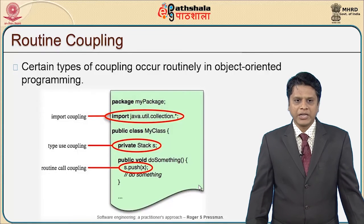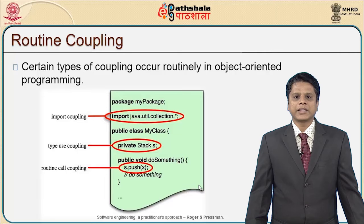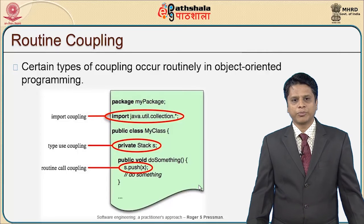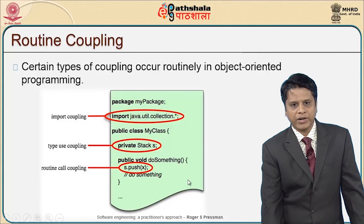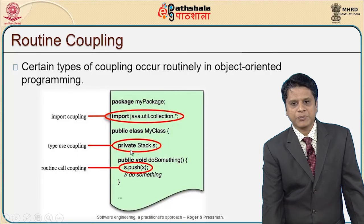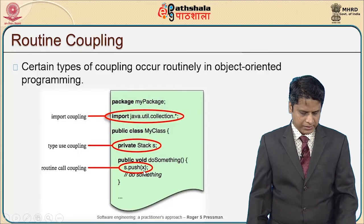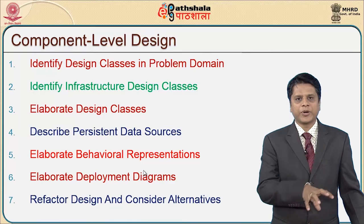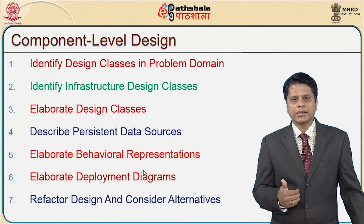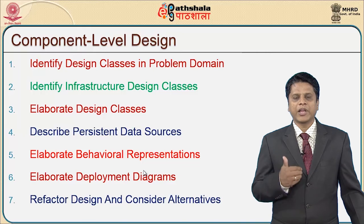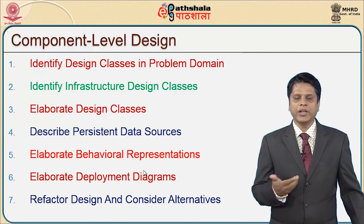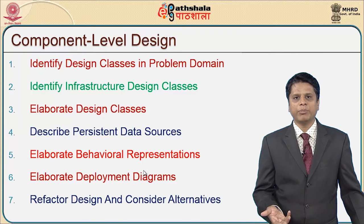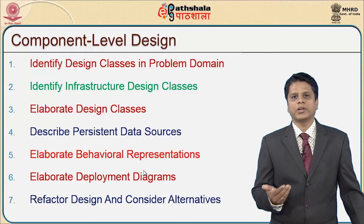There is another type called routine coupling, where certain types of coupling occur routinely in object-oriented programming — for example, import java.util.collection.* is import coupling, private stack s is type use coupling, and s.push() is routine call coupling. When doing object-oriented design, there should not be more coupling; there should be more cohesion.